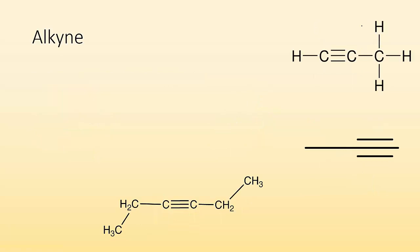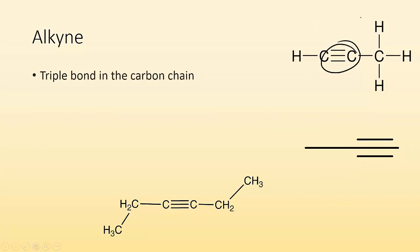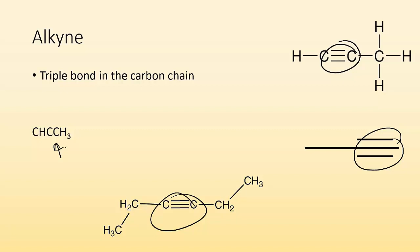Alkynes — when you have a triple bond in the carbon chain, that's an alkyne. You're looking for those triple bonds. In the condensed structural formula, you might see CH, then a C, then a CH3. Those two carbons don't have complete octets because there's a triple bond in between them. So you're looking for a triple bond.